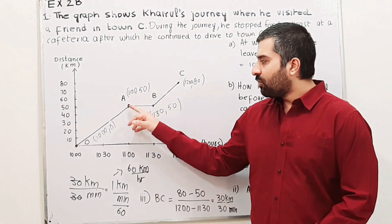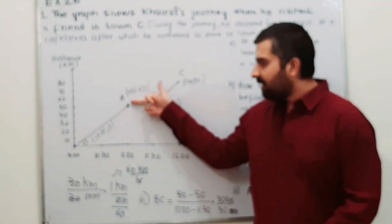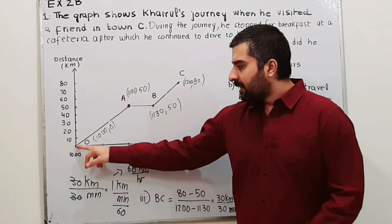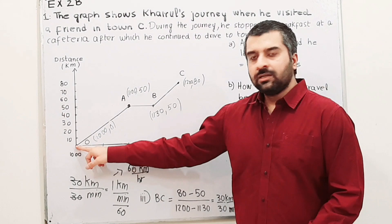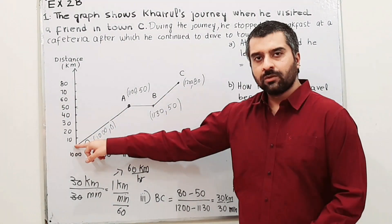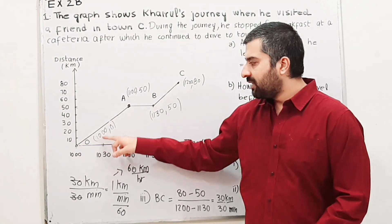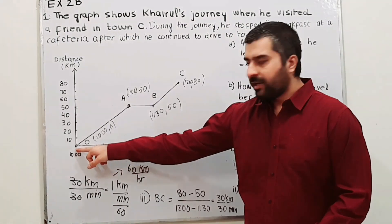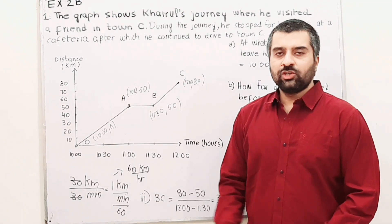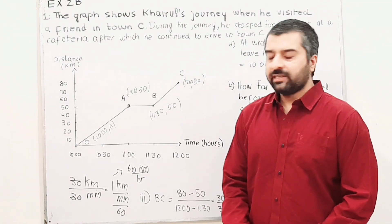Here we have got coordinates. The value of x is 11 hours and the value of y is 50 kilometers. Here, the x is 10 hours whereas the value on y is 0 kilometers. So the coordinates are 10 hours on x and 0 kilometers on y.